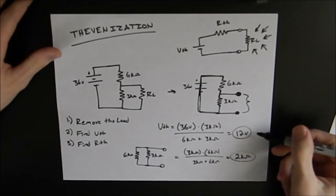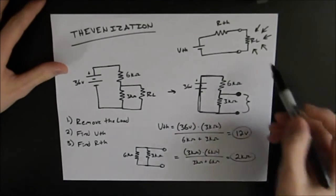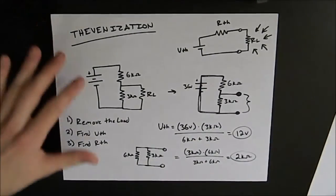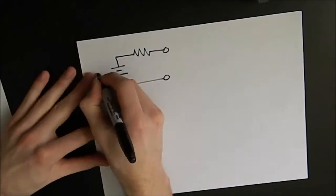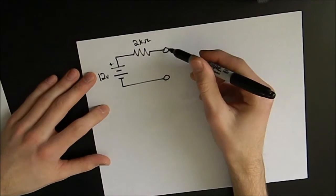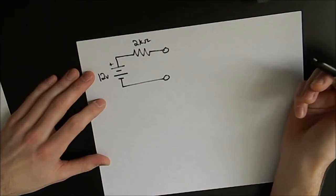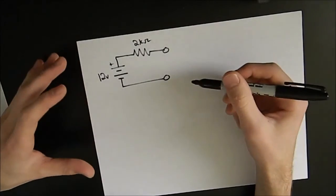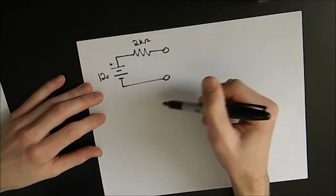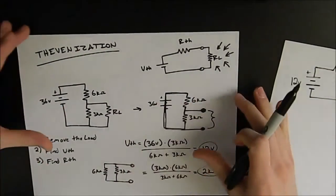So now that we have our Thevenin voltage and our Thevenin resistance we can draw this circuit up here with those two numbers. So our new circuit looks like this. Now what we're able to do is put any load resistance in here that we want and easily test the voltage and the current through that circuit without having to reevaluate the circuit each time.